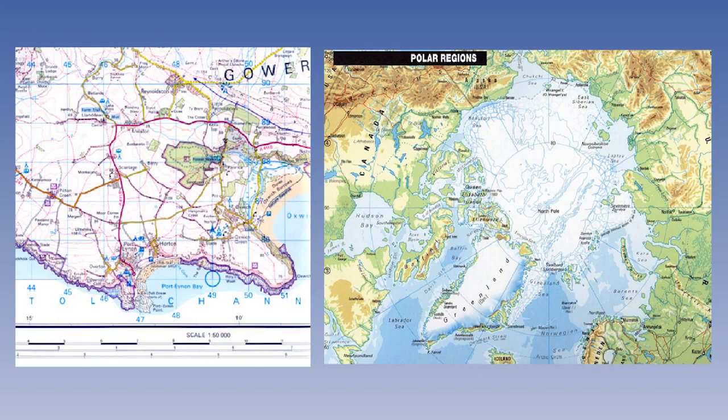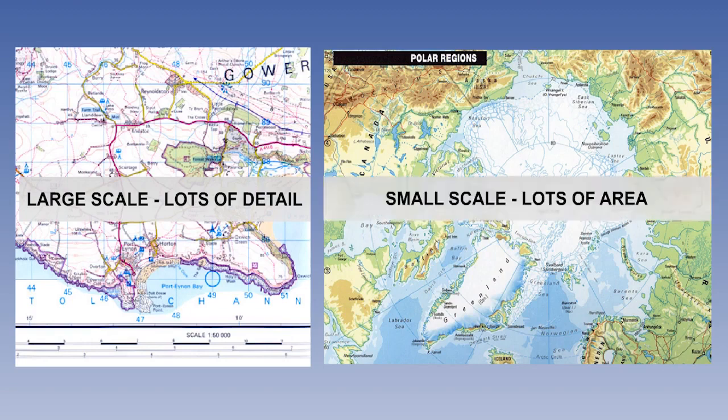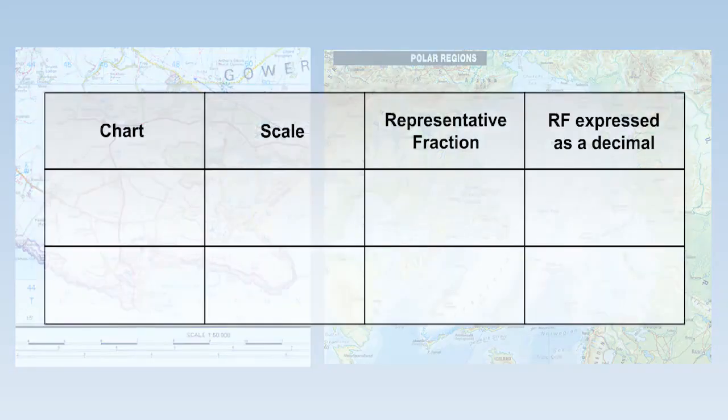So to summarise. Large scale, lots of detail. Small scale, lots of area. This seems odd to some people, but it is the right way round. The larger scale has the larger representative fraction. The smaller scale has the smaller representative fraction.